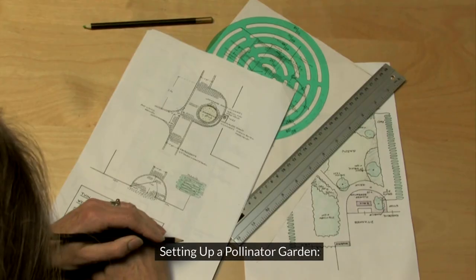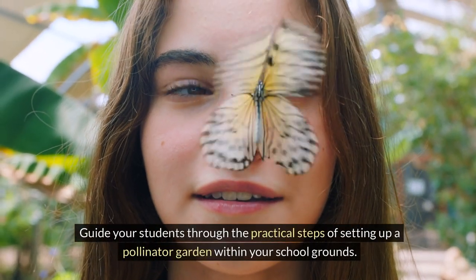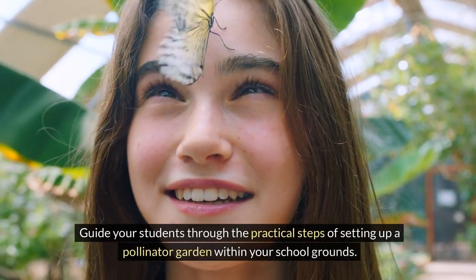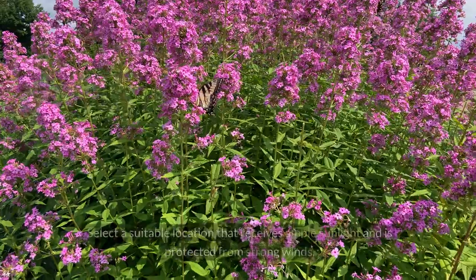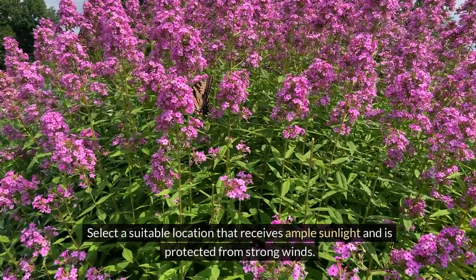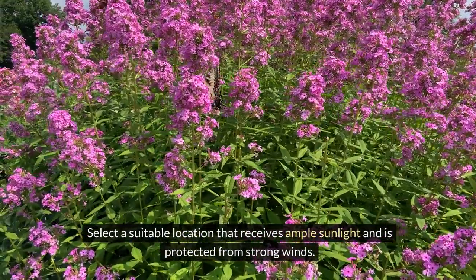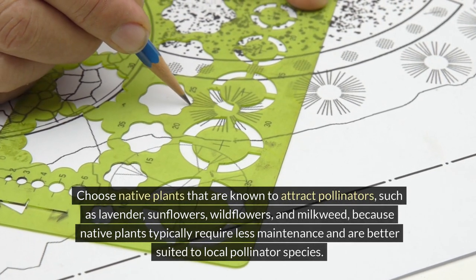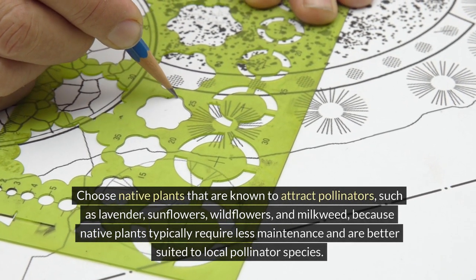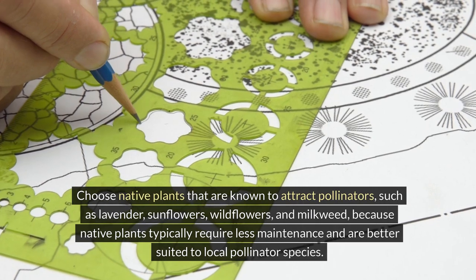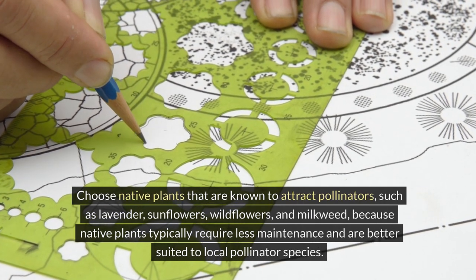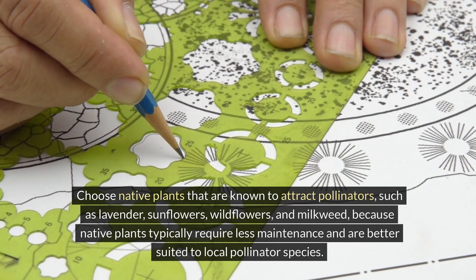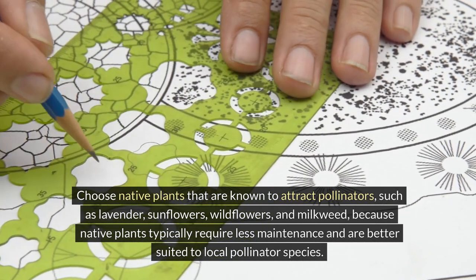Setting up a pollinator garden. Guide your students through the practical steps of setting up a pollinator garden within your school grounds. Select a suitable location that receives ample sunlight and is protected from strong winds. Choose native plants that are known to attract pollinators such as lavender, sunflowers, wildflowers, and milkweed, because native plants typically require less maintenance and are better suited to local pollinator species.